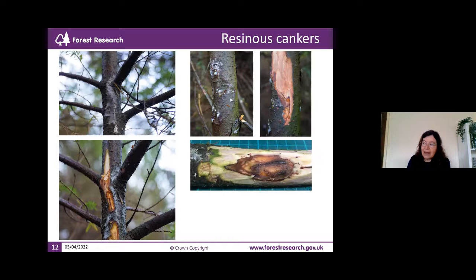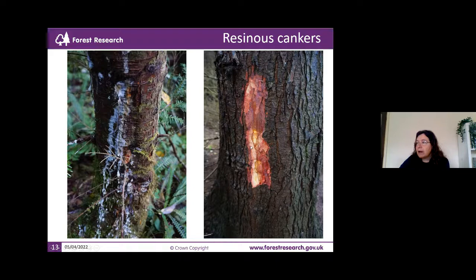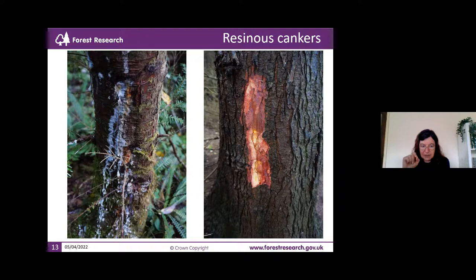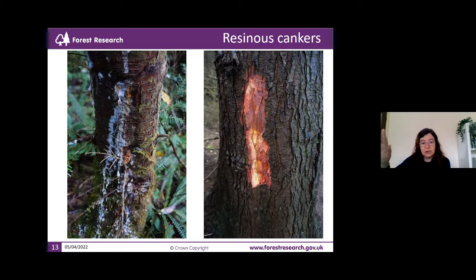In some cases, when you find this resin flow at the base of trees, you may find that Armillaria honey fungus is also present. But beneath or beyond the honey fungus you will find Phytophthora is there. It's worth always checking when you have this resin — see if you have Armillaria and, beyond the Armillaria lesion, whether you also have Phytophthora. This is very important. In the foliage, the needles turn from bright green to olive green. It's quite difficult to see but you can distinguish the colour difference.